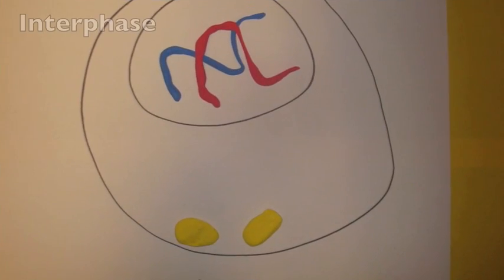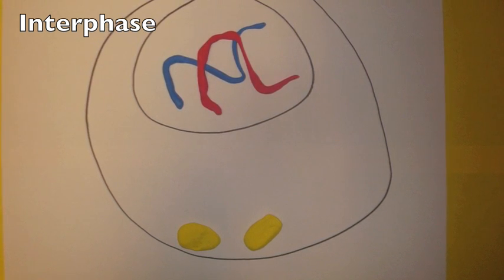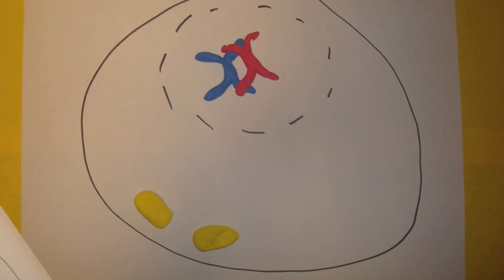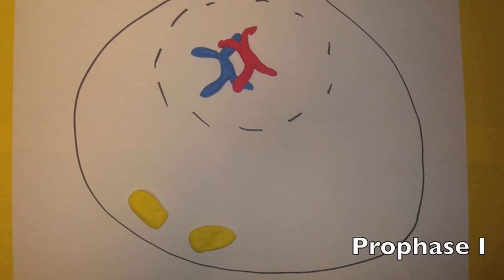Just like in mitosis, during prophase I, DNA condensation occurs, the nuclear envelope and nucleoli disappear, and the spindles start to form. The chromosomes first become visible here, and they are visible as tetrads.